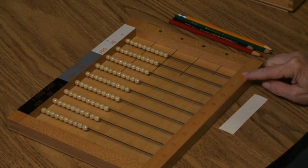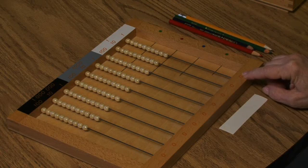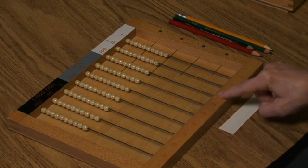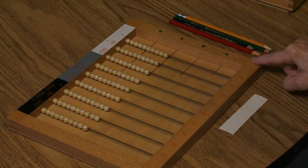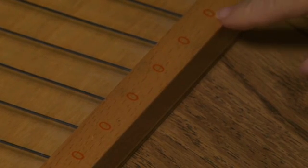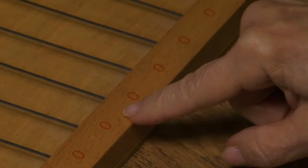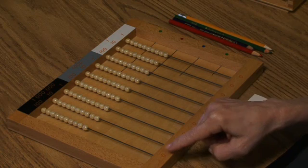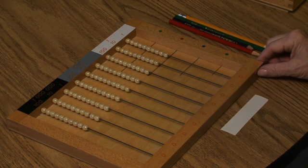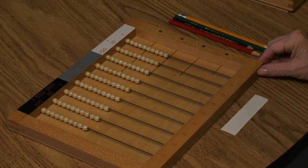The other thing to notice about this bead frame is that along the bottom line, the bottom part of the frame, there are a series of red zeros. And what this bead frame will do will help us move towards more abstract multiplication.